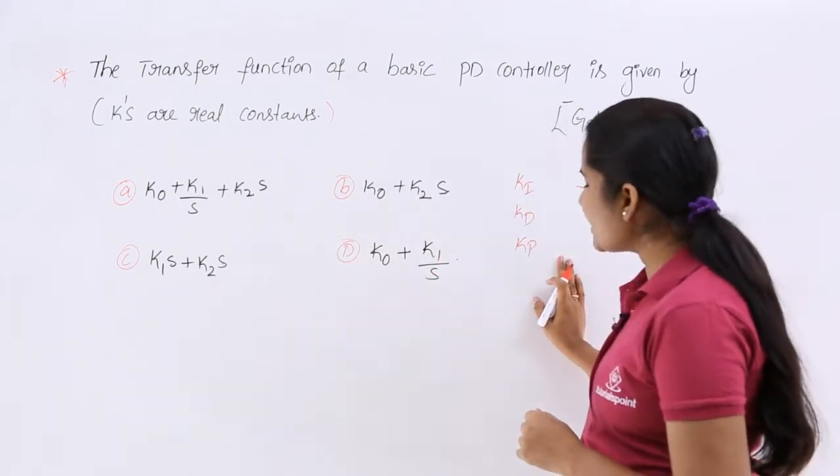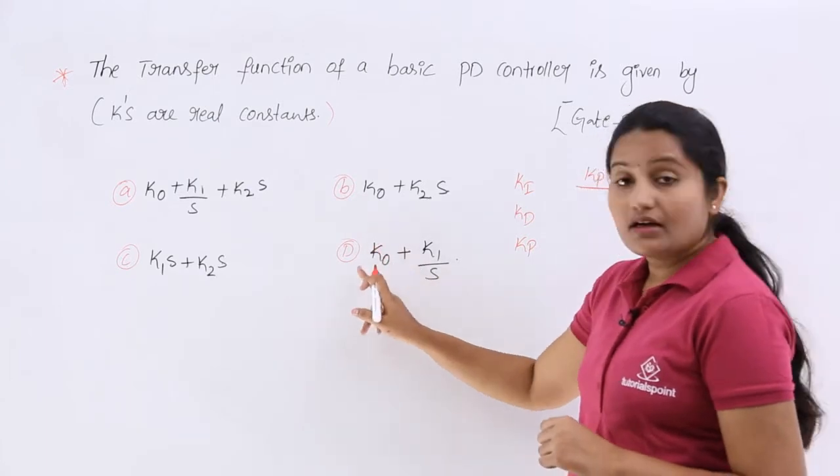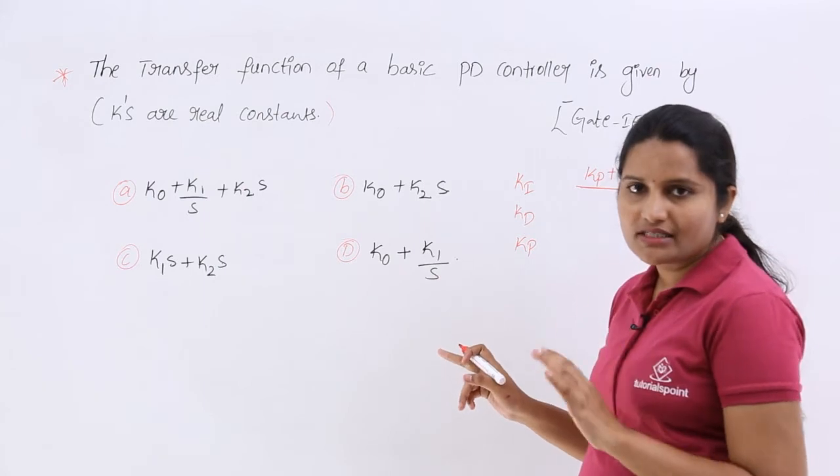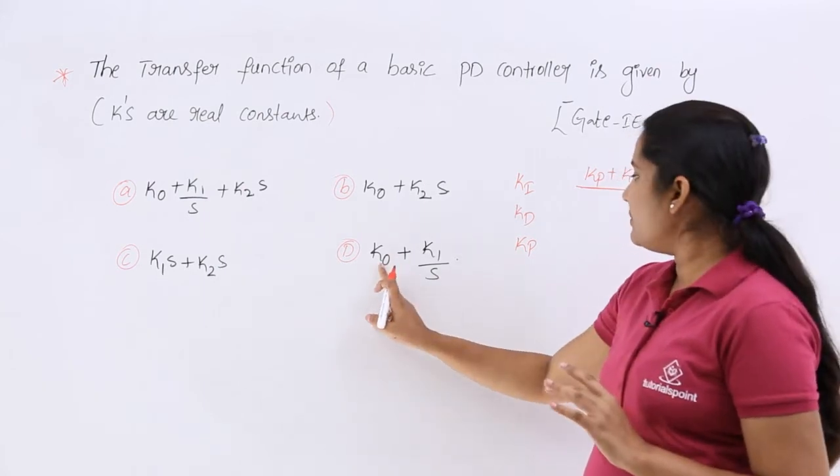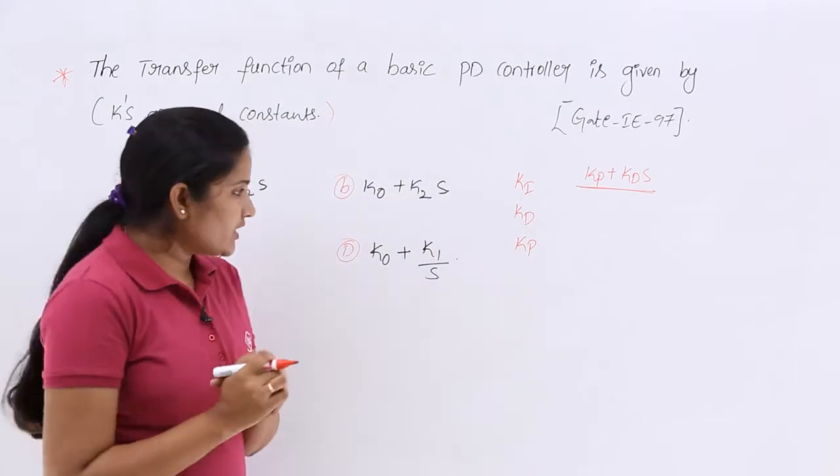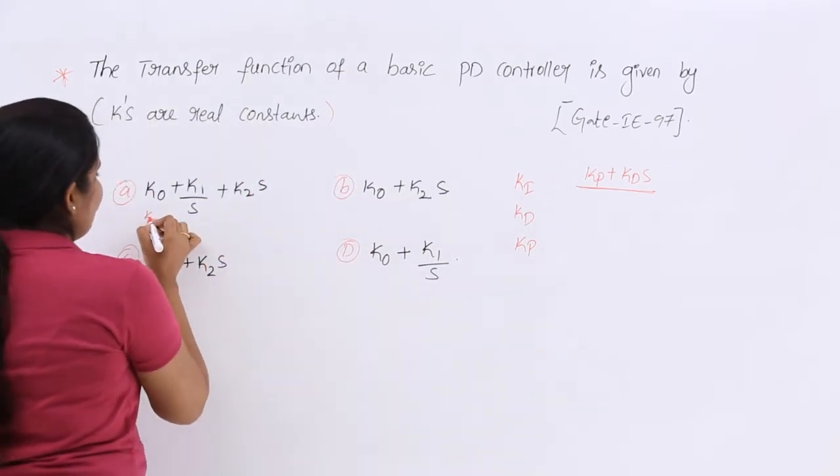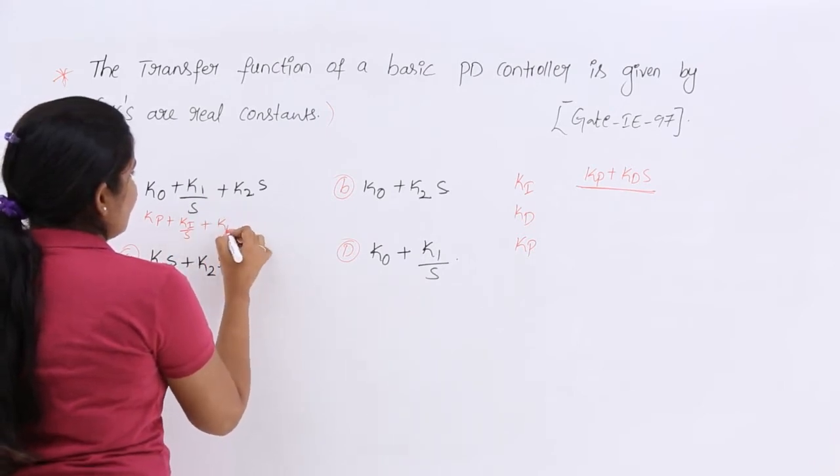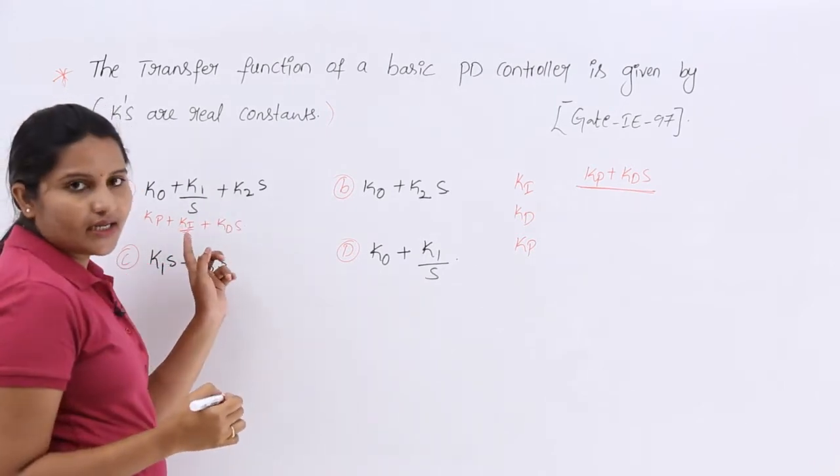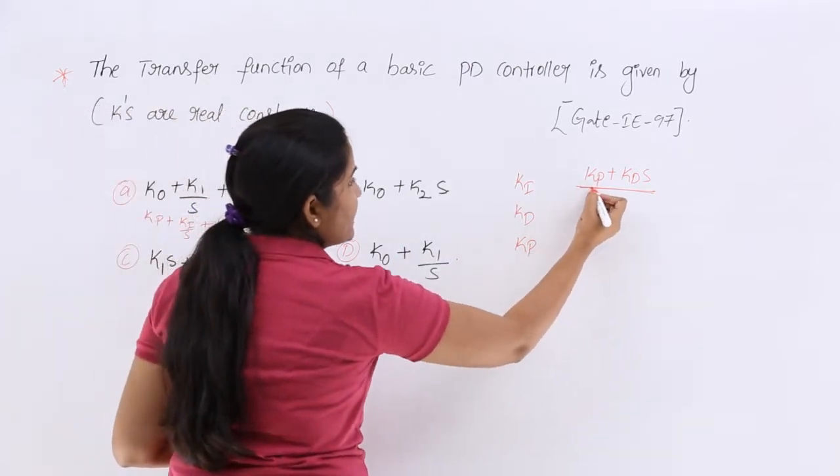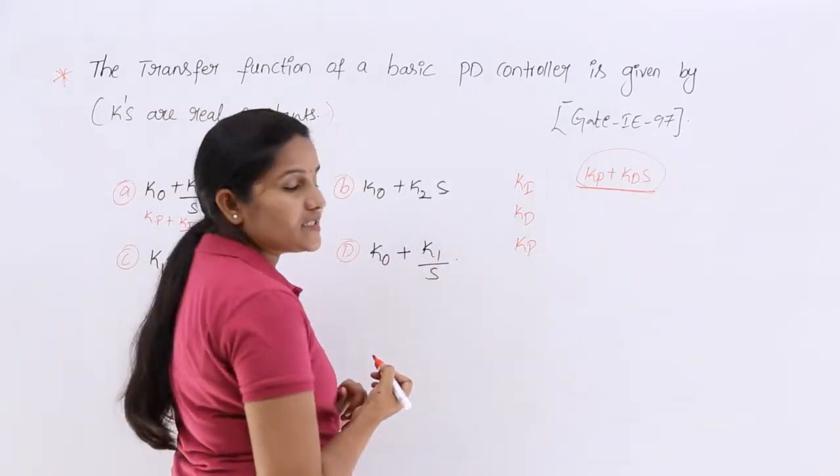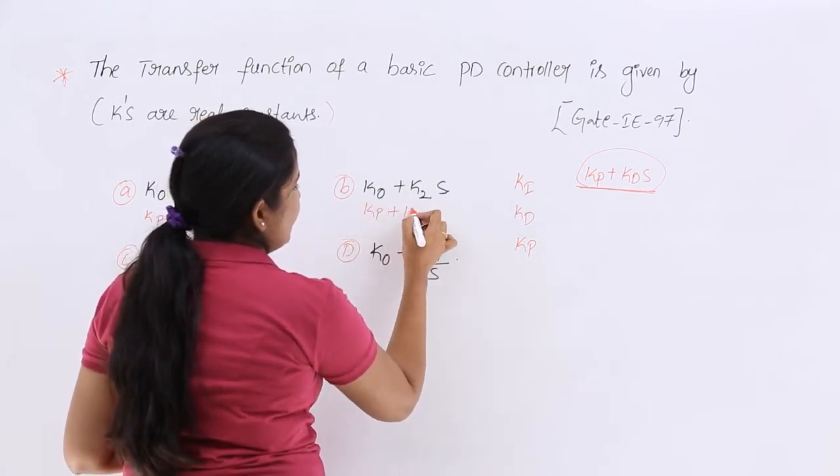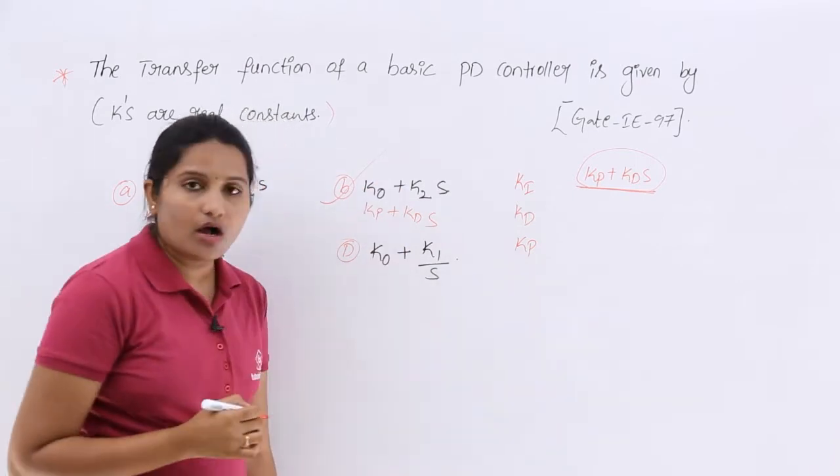Here, that means, if you are observing single K0 or anything without any S coefficients, then that will be your Kp. You just rewrite this. Kp plus Ki by S plus Kd into S like this. Which will match for this Kp plus Kd into S. Option B is the right option. How?